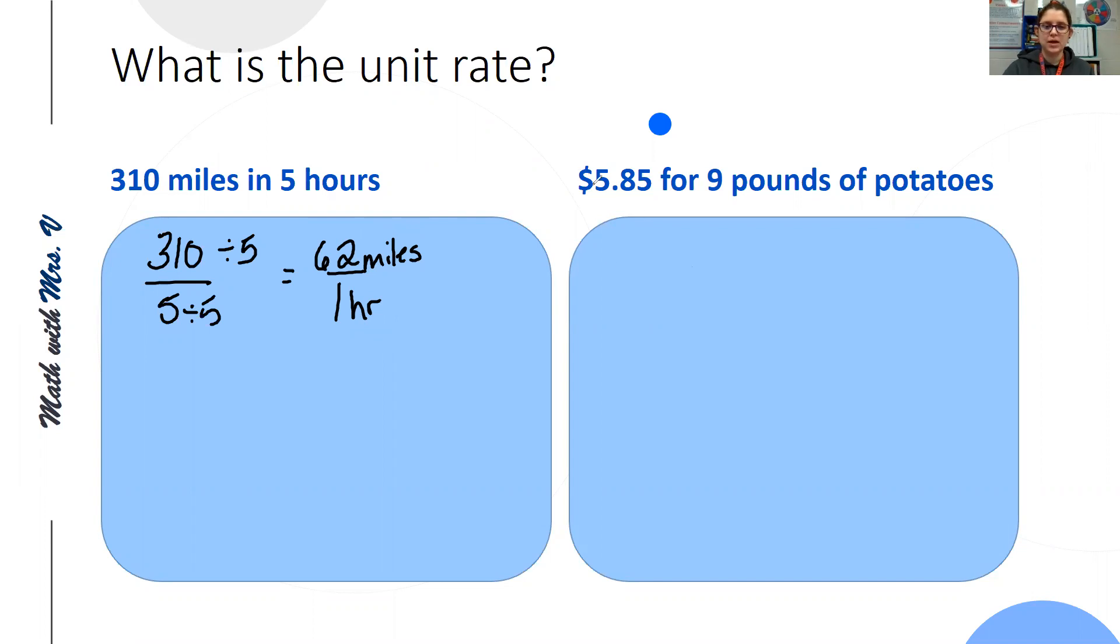My next one, I paid $5.85 for 9 pounds of potatoes. I want to find the unit rate. What's the cost of one pound of potatoes? So $5.85 in my numerator, 9 in my denominator.